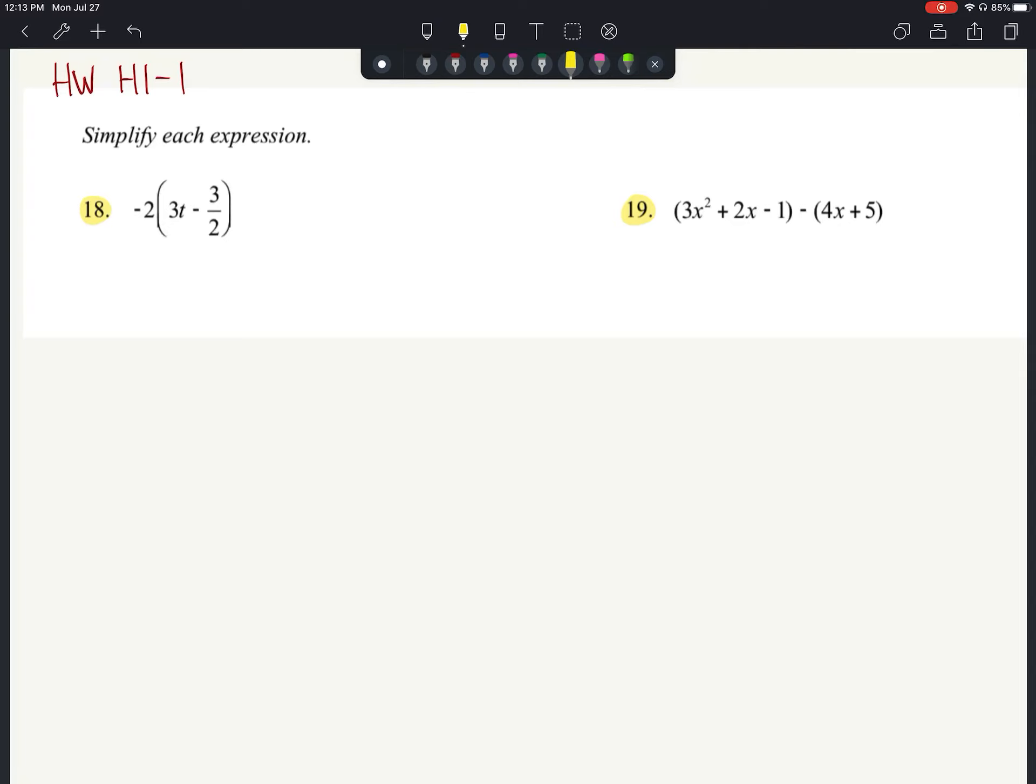So for the first one here, we've got a negative 2 times a quantity of 3t minus 3 halves. So we're going to multiply our negative 2 times a 3t and then we're going to multiply our negative 2 times a negative 3 halves.